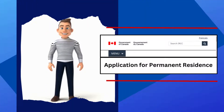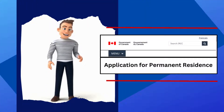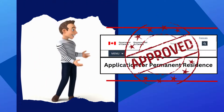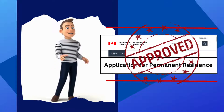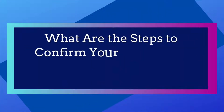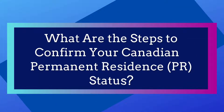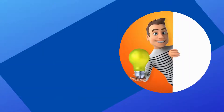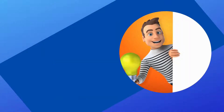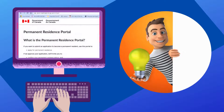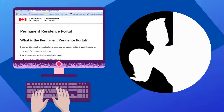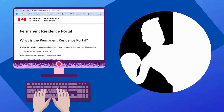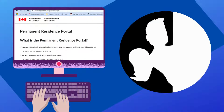If Immigration, Refugees and Citizenship Canada approved your application for permanent residence, you are probably wondering about the steps you should take to confirm your status. Keep watching this video as we will show you how you can confirm your PR status using IRCC's new online Permanent Residence Portal.